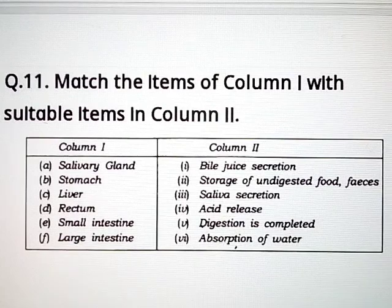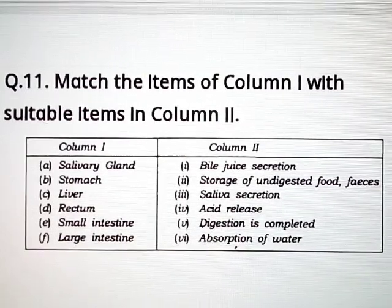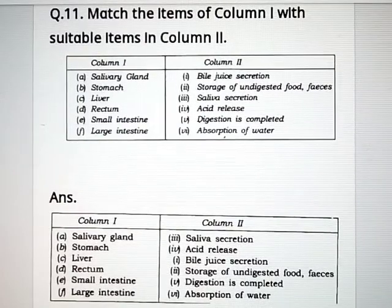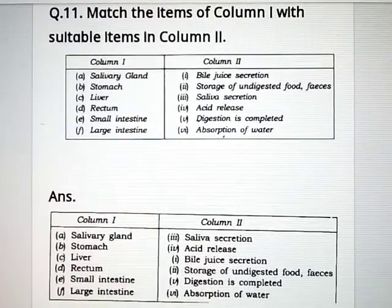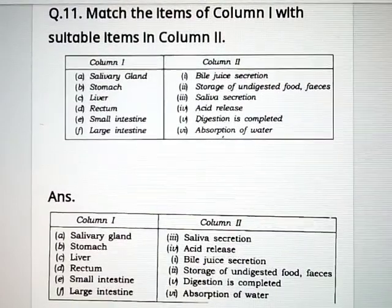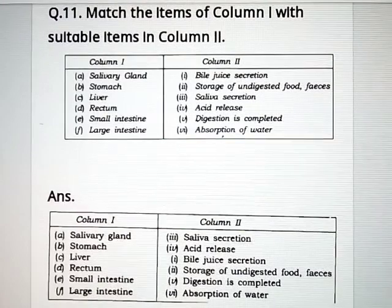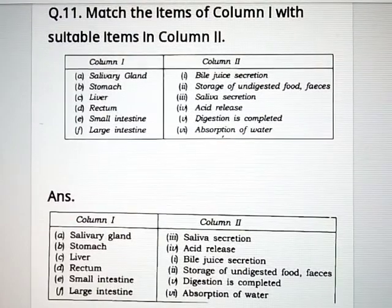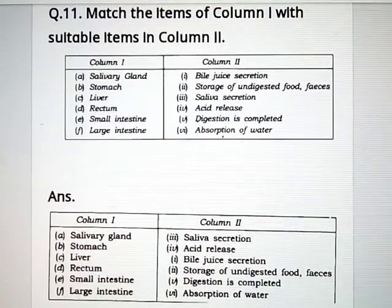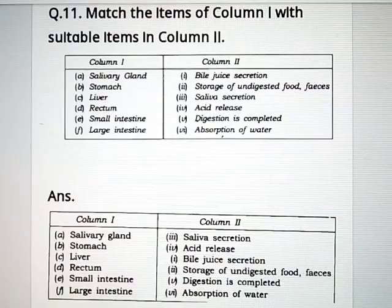Question number 11: match column 1 with suitable items in column 2. Salivary gland — saliva secretion. Stomach — acid release. Liver — bile juice secretion. Rectum — storage of undigested food or feces. Small intestine — digestion is completed. Large intestine — absorption of water.